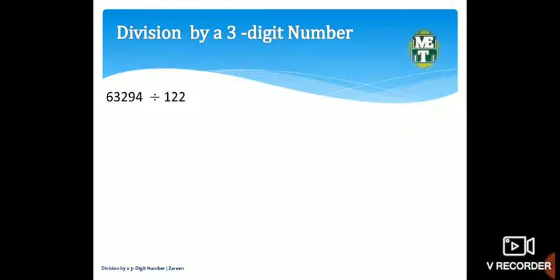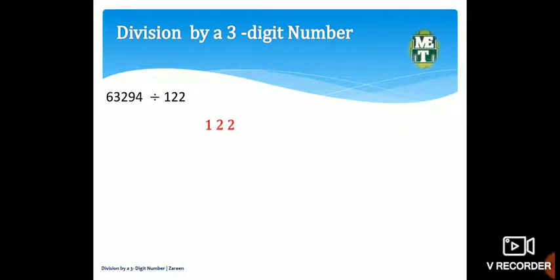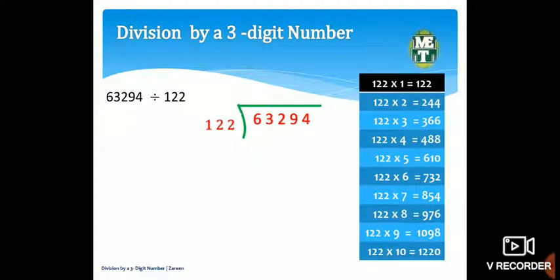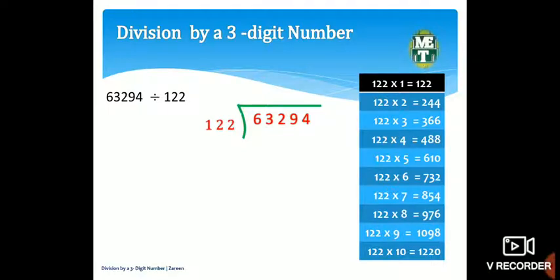Yahan pe hum pehle dividend ko box ke andar likhte hain aur divisor ko box ke bahar likhte hain. Phir is ke baad jo agla step hai, we write the multiplication table of 122. 122 ko hum multiplication ke zariye yahan pe likh sakte hain, jaise pichhli presentation mein maine aapko kaha tha.